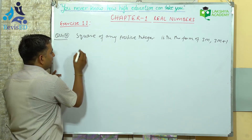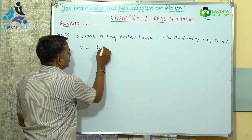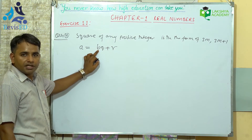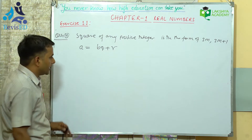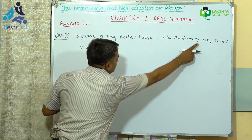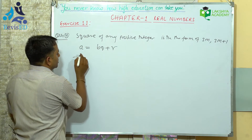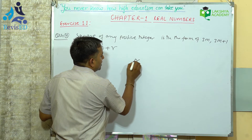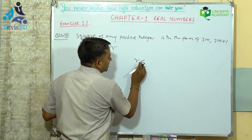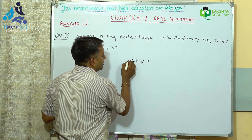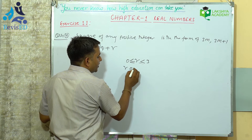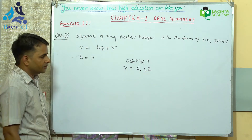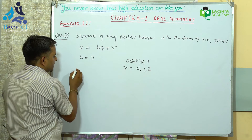Again we will follow Euclid's division lemma. So Euclid's division lemma is: A equals BQ plus R, where A is the dividend, B is the divisor, Q is the quotient, and R is the remainder. Here the divisor is 3, so B equals 3. When we have divisor as 3, the possible remainders R satisfy 0 ≤ R < 3. So possible values of R will be 0, 1, and 2.